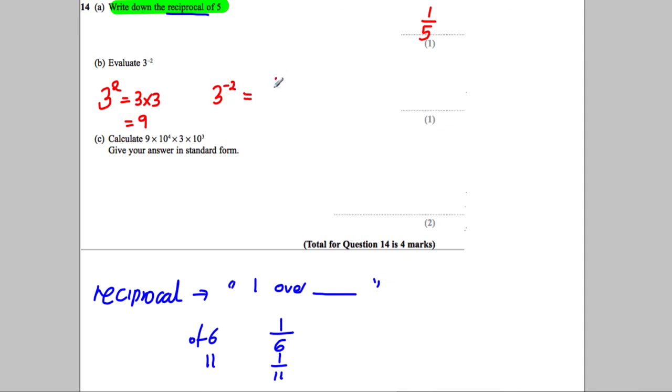It means that you work out 1 divided by 3 squared. That's what that negative is telling you. And 3 squared is 9, and 1 divided by 3 squared is 1 divided by 9, or 1 ninth. Okay, we're asked to calculate...